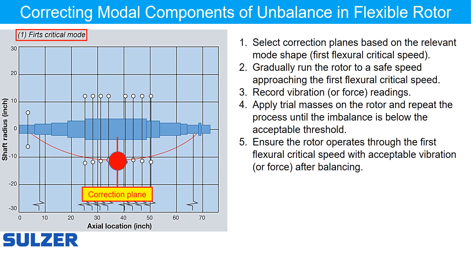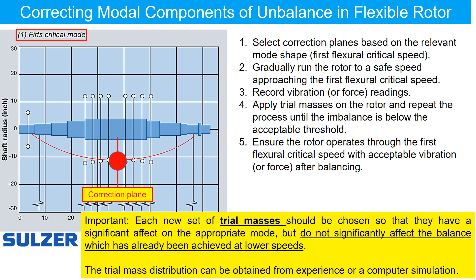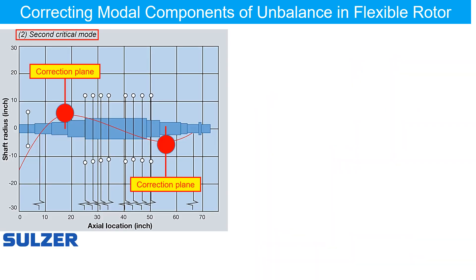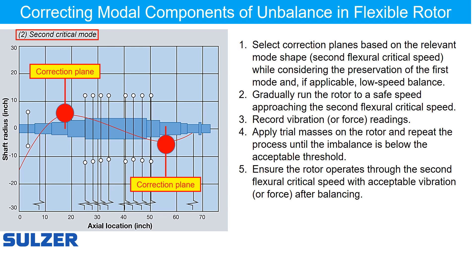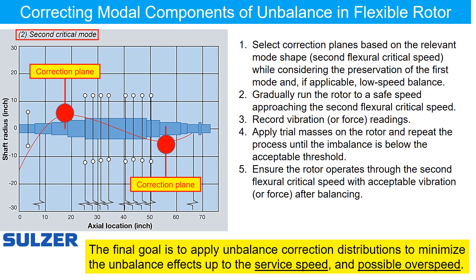For flexible rotors, the correction plane is shown here based on the relevant mode shapes for the first critical mode. It is important to note that trial masses should impact the first mode but not disrupt the achieved balance at low speeds. Here is an example of the second critical mode; the balancing steps are listed on the right. Repeat with trial masses until imbalance is within acceptable limits. The goal is to minimize imbalance effect on service speed and over speed.